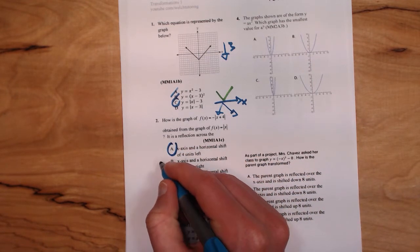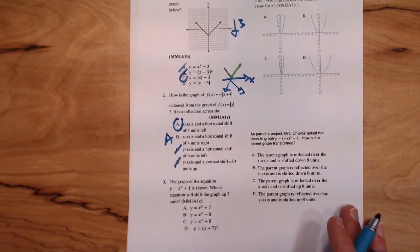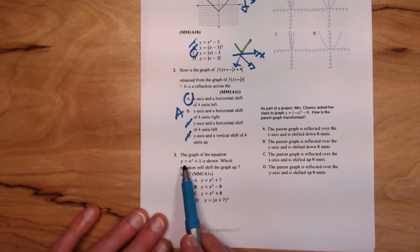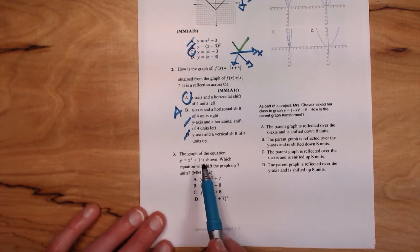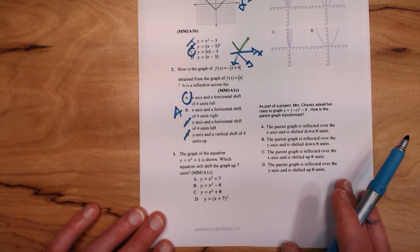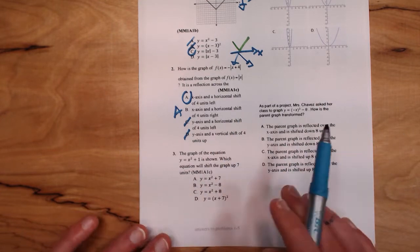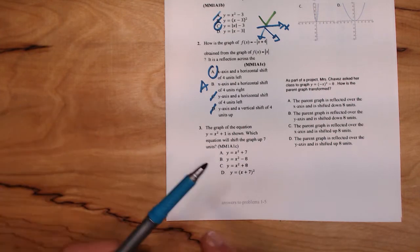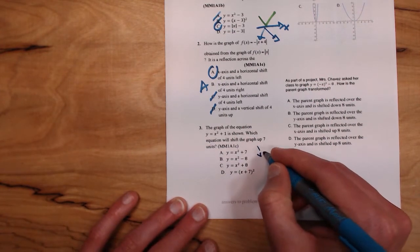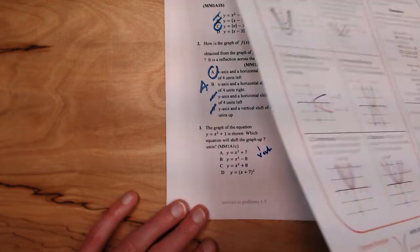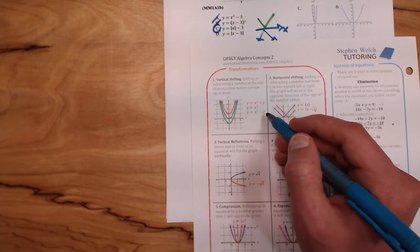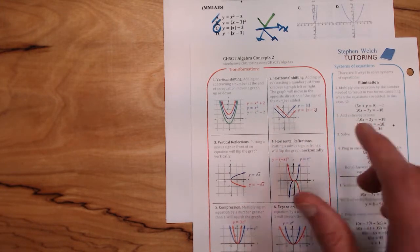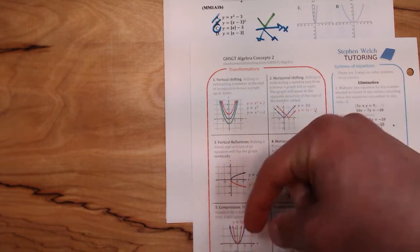Number three says the graph of y = x² + 1 is shown. Which equation will shift the graph up 7 units? There's no graph shown, but that's okay. To move up, that's a vertical shift. Looking on our formula sheet, we see to make a vertical shift happen we need to add or subtract a number from the end of our equation. To make our graph move up, we need to add a number. Subtracting would make it go down.